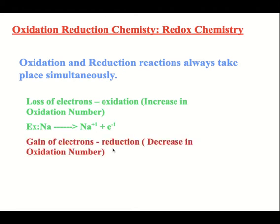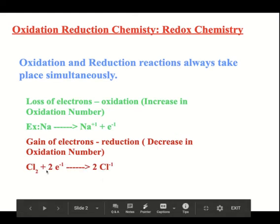A gain of electrons is reduction — that's the grr in Leo grr. When you're gaining electrons, you have a decrease, or a literal reduction, in the charge. You're gaining negativity. When gaining electrons, electrons will always be on the reactant side.